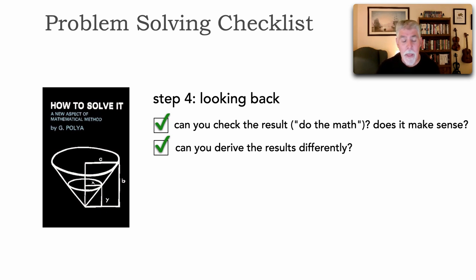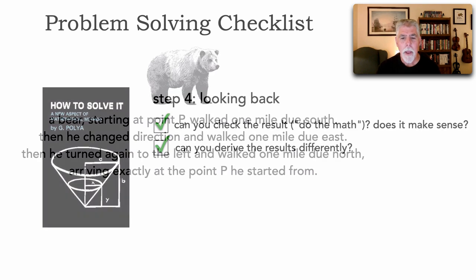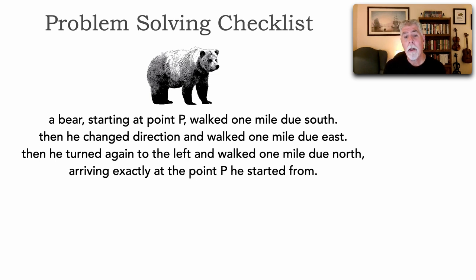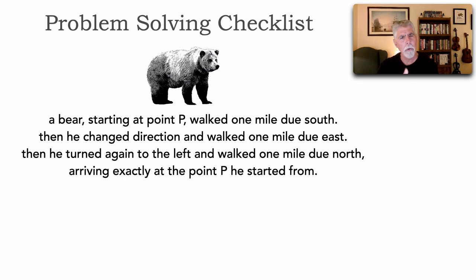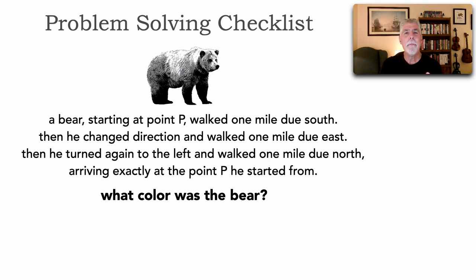Let's try the checklist out and see how powerful it is. Here's a problem: a bear starting at point P walked one mile due south, then changed direction and walked one mile due east, then turned again to the left and walked one mile due north, arriving at exactly the point P he started from — with only three directions. The question: what was the color of the bear? Go ahead and pause the video and see if you can use the checklist to puzzle this out.